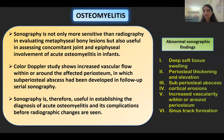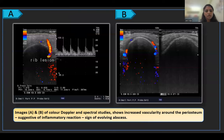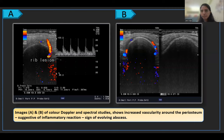Sonographic findings in osteomyelitis include deep soft tissue swelling, periosteal thickening and elevation, subperiosteal abscess formation, cortical erosion, increased vascularity within and around the periosteum, and sinus tract formation. The color Doppler and spectral study images show increased vascularity around the periosteum, suggesting an inflammatory reaction and signs of evolving abscess — allowing diagnosis of acute osteomyelitis before abscess formation, which is not seen on plain radiograph.